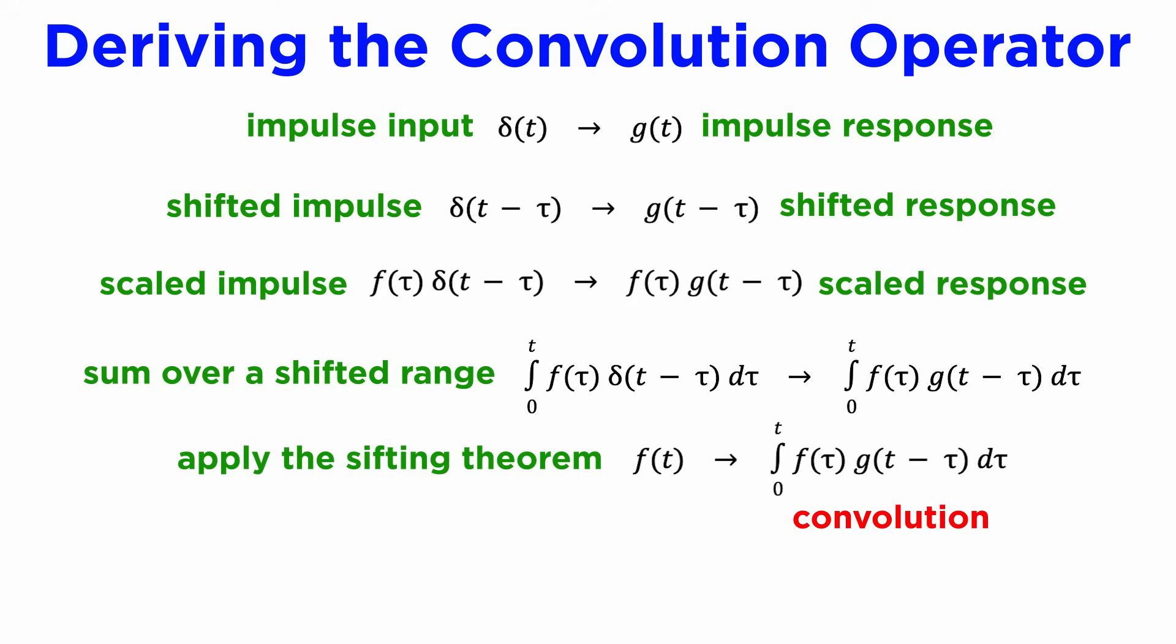On the right, we find that the system response will be the integral from 0 to t of f(tau) times g(t - tau) d tau, which is an expression known as the convolution of the functions f and g, commonly written using this asterisk notation and read as f star g.